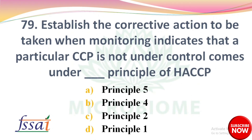Establish the corrective action to be taken when monitoring indicates that a particular CCP is not under control — this comes under which principle of HACCP? Options: A) Principle 5, B) 4, C) 2, D) 1. The right answer is option A: Fifth principle.